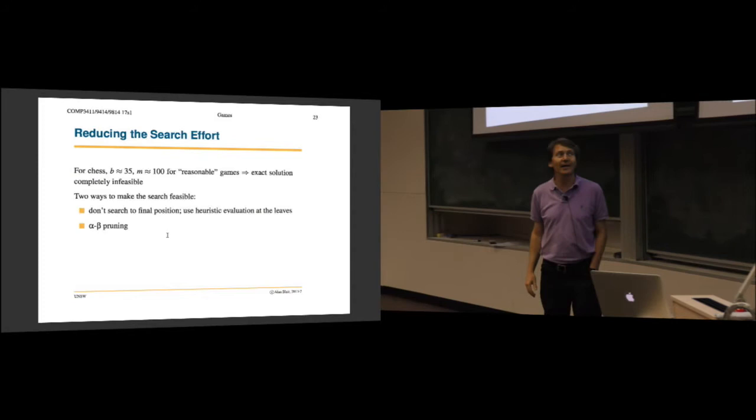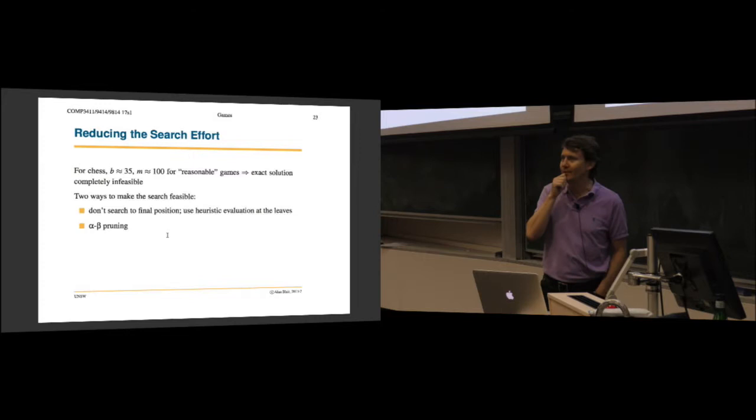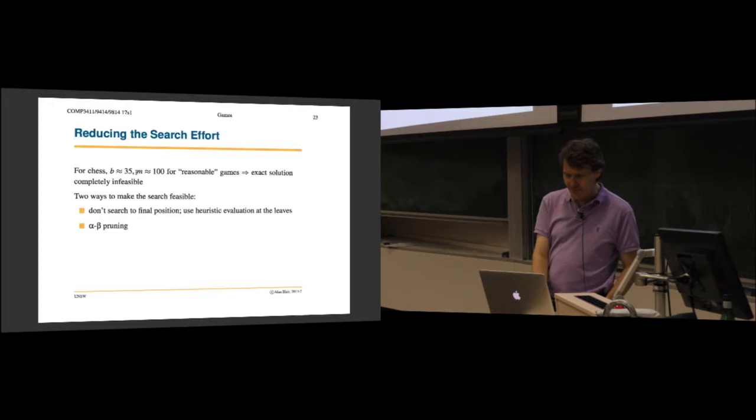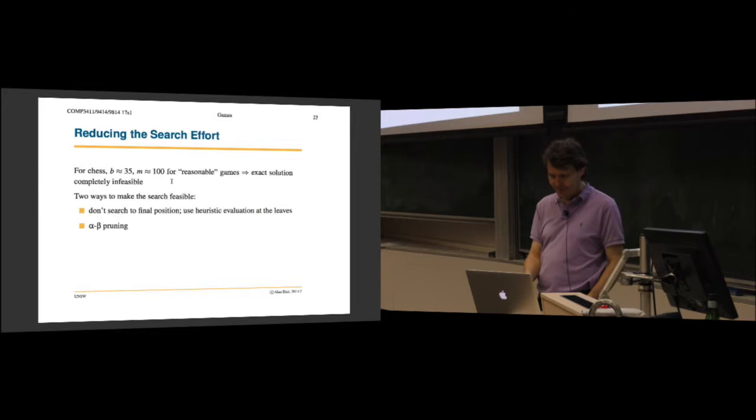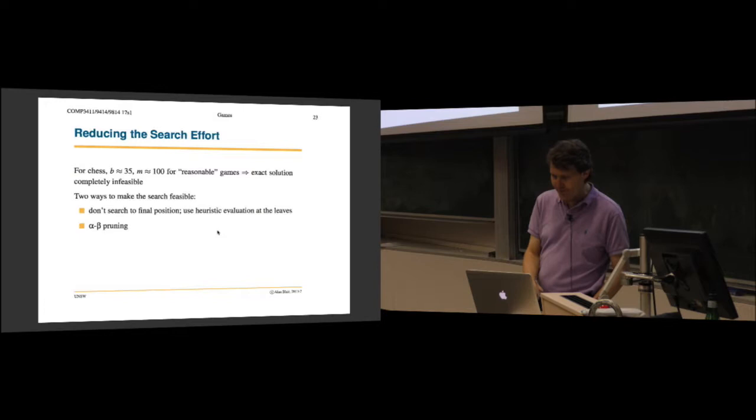Now, with a game like tic-tac-toe, we can search easily to the end of the game. There's a maximum of nine moves, in fact. But if we get to a serious game like chess, the number of possible board states is astronomically large. The branching factor is about 35. For chess in the mid-game, you've got a choice of about 35 different moves. And a typical chess game could take about 100 moves. So if you figure this out, 35 to the power of 100 is probably larger than the number of atoms in the galaxy or something like that. So you couldn't possibly search to the end of the game. So how do we deal with this? So this is this tension about the computation time.